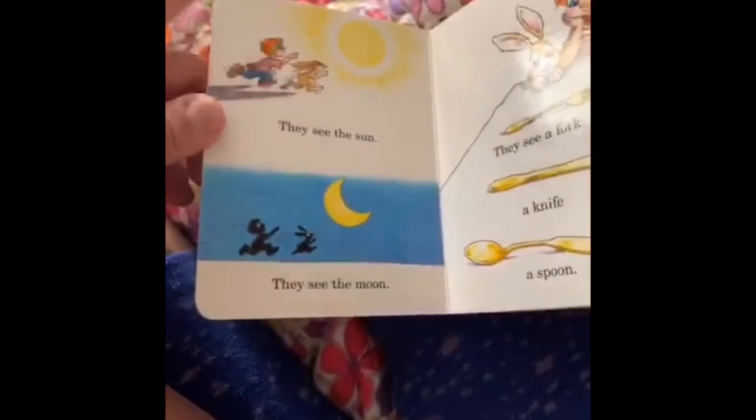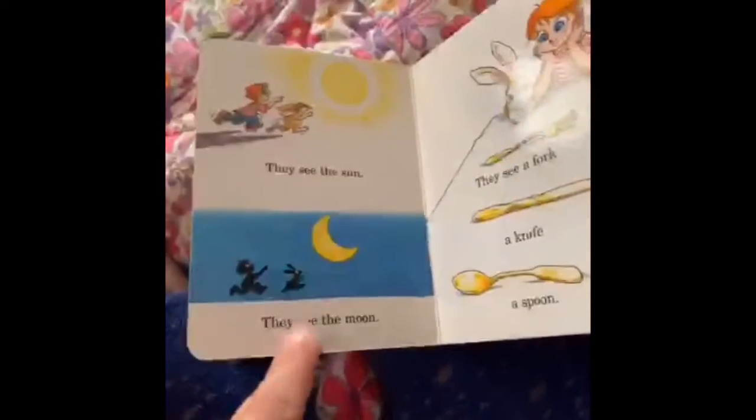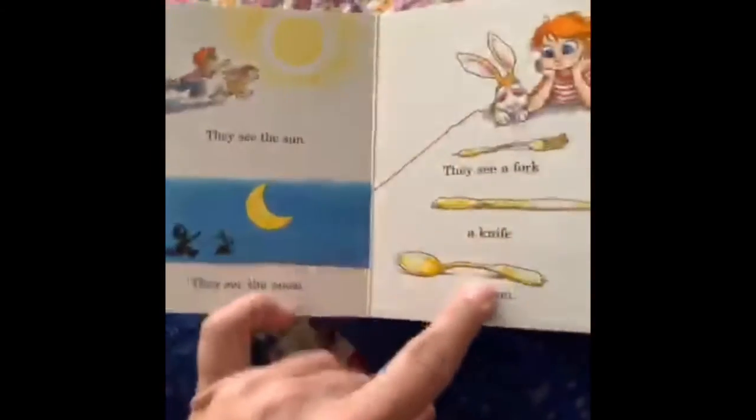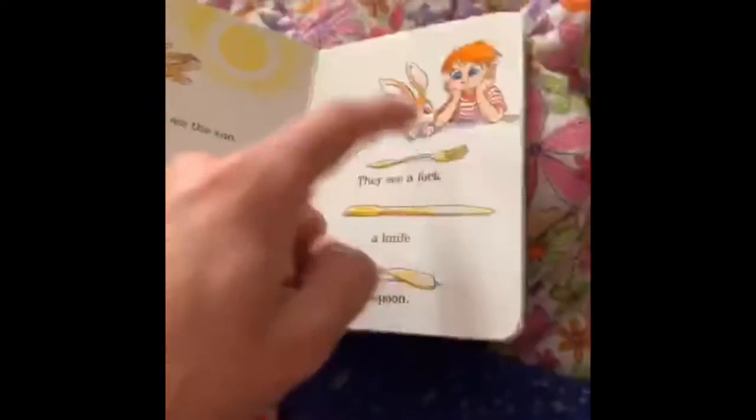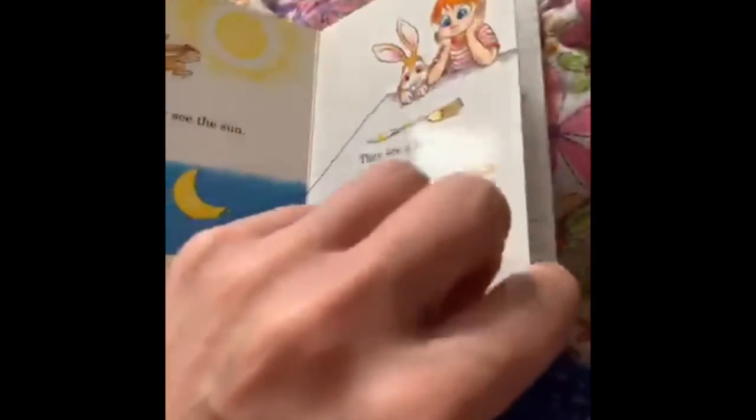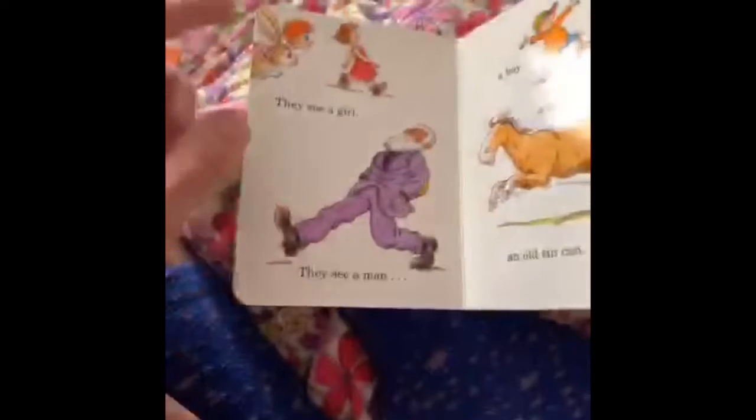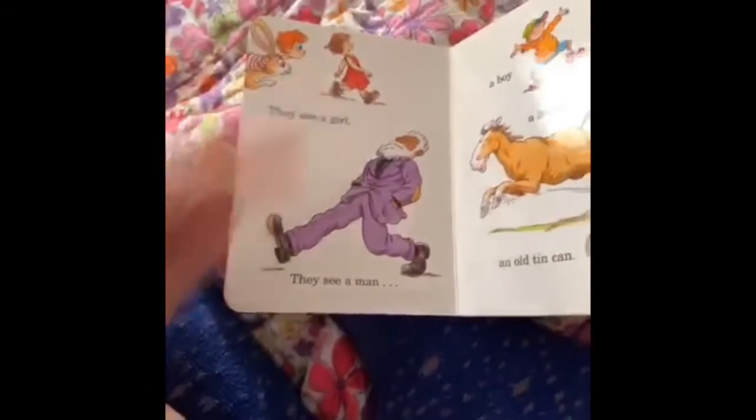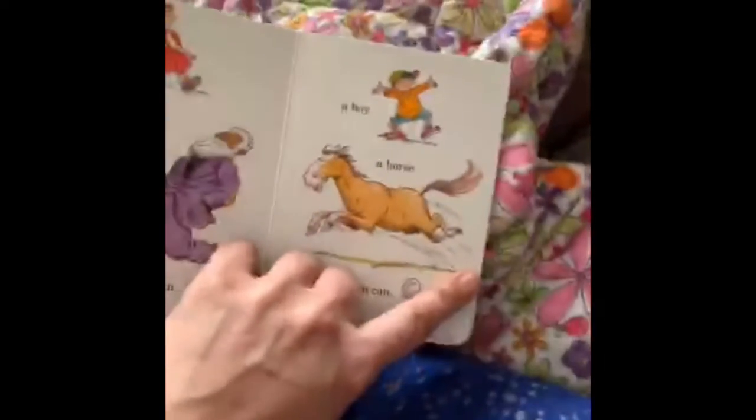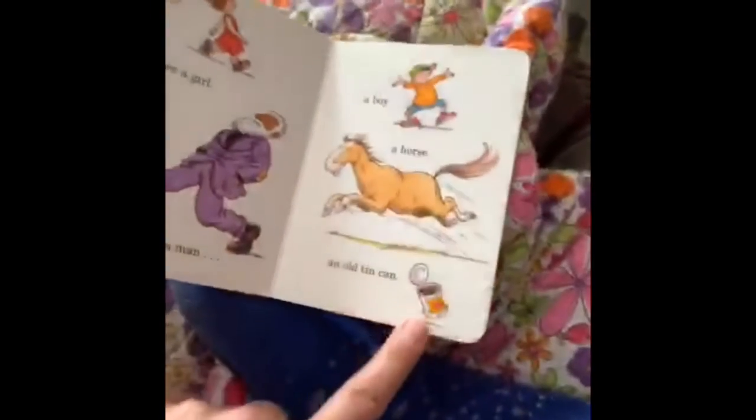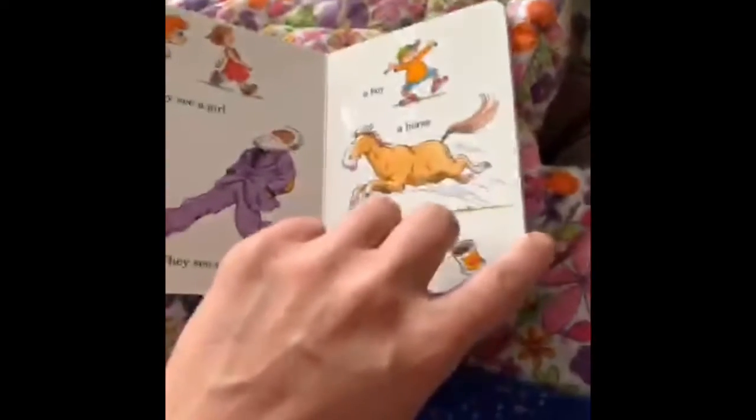They see a bird. They see a bed. They see the sun. They see the moon. They see a fork, a knife, a spoon. They see a girl. They see a man. A boy, a horse, and an old tin can.